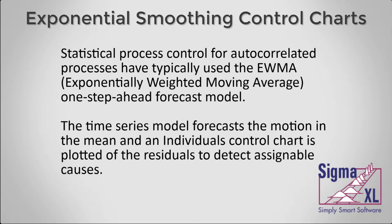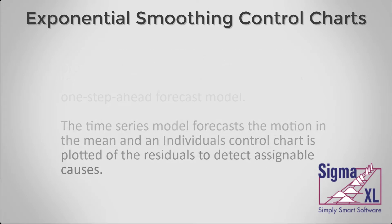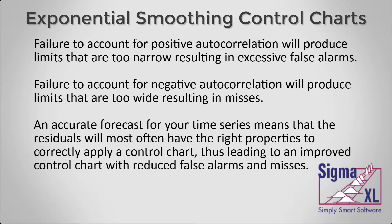Statistical process control for autocorrelated processes has typically used the Exponentially Weighted Moving Average one-step-ahead forecast model. The time series model forecasts the motion in the mean, and an individuals control chart is plotted of the residuals to detect assignable causes. Failure to account for positive autocorrelation will produce limits that are too narrow, resulting in excessive false alarms. Failure to account for negative autocorrelation will produce limits that are too wide, resulting in misses.